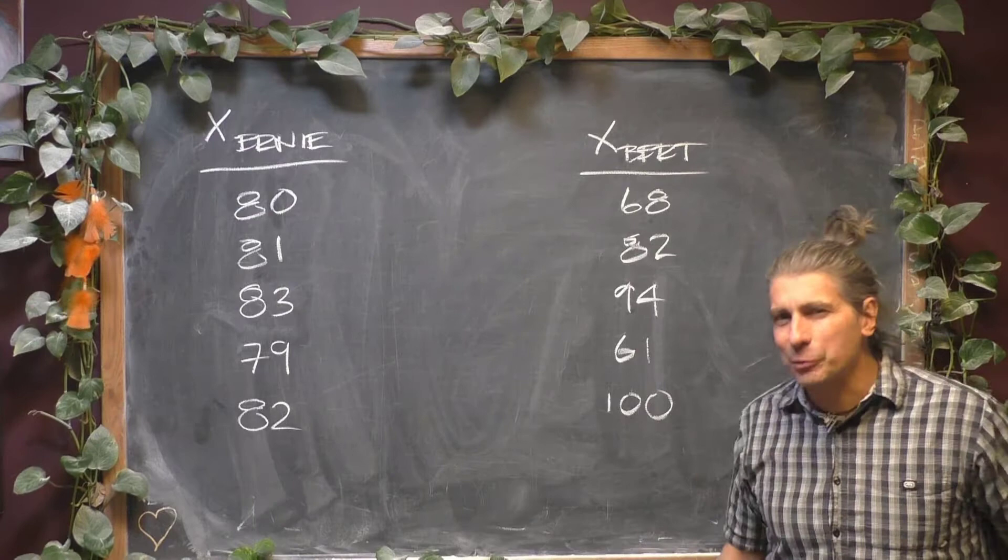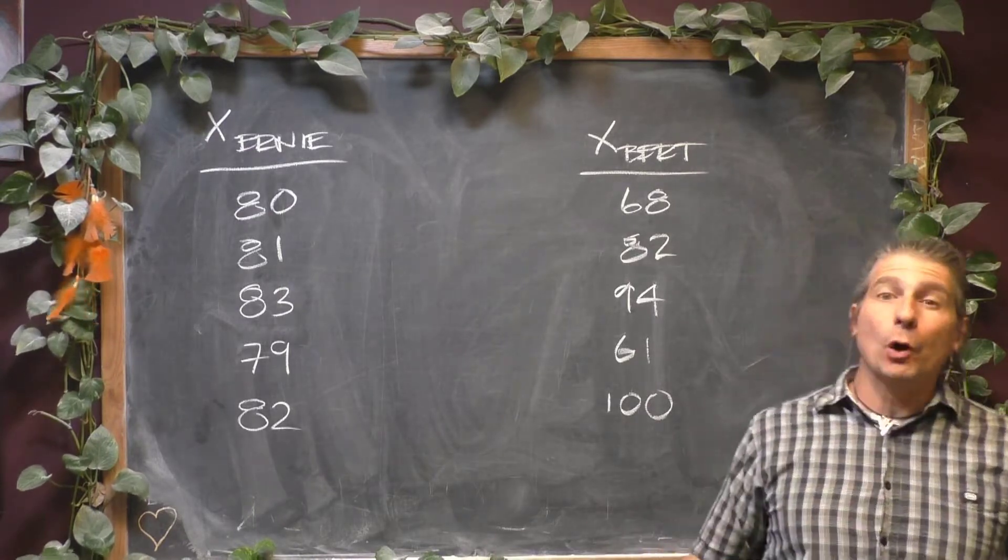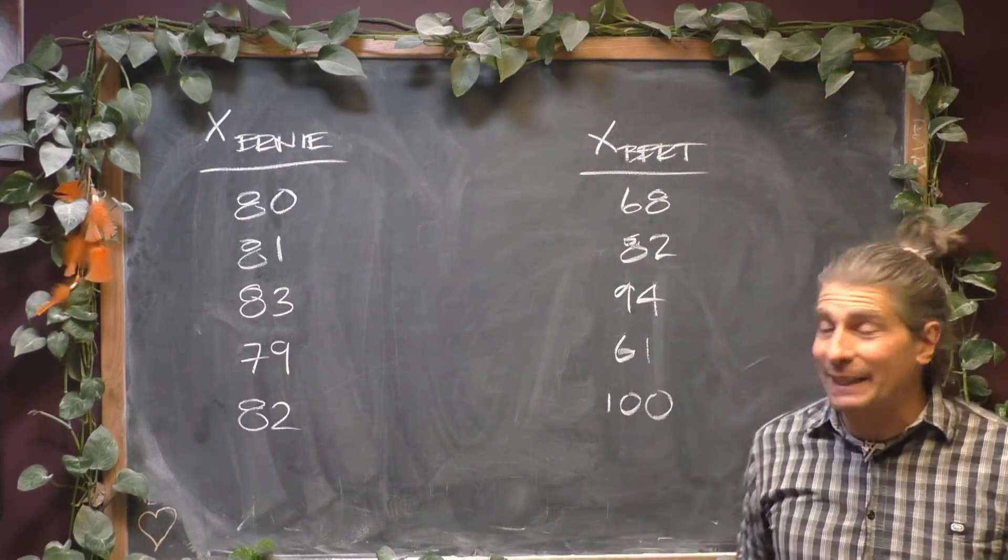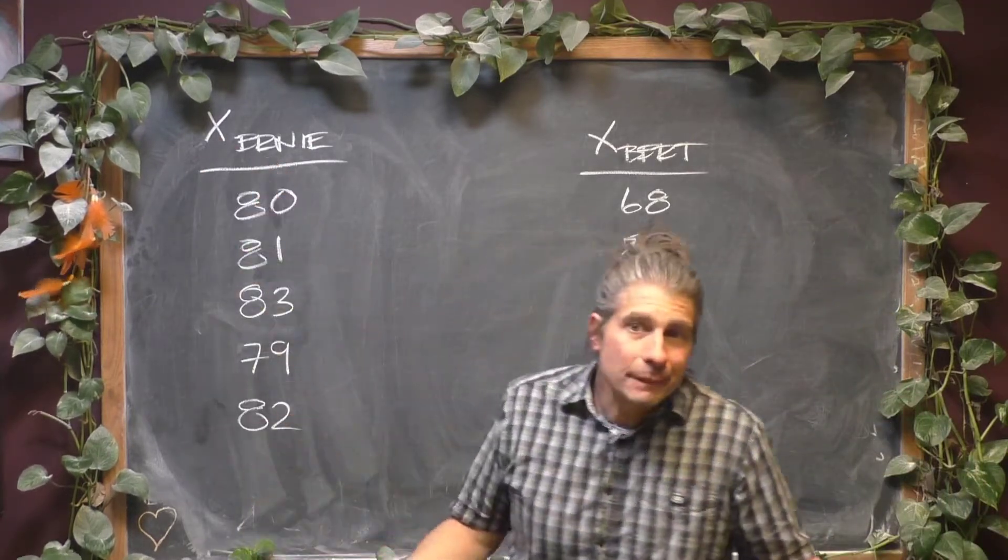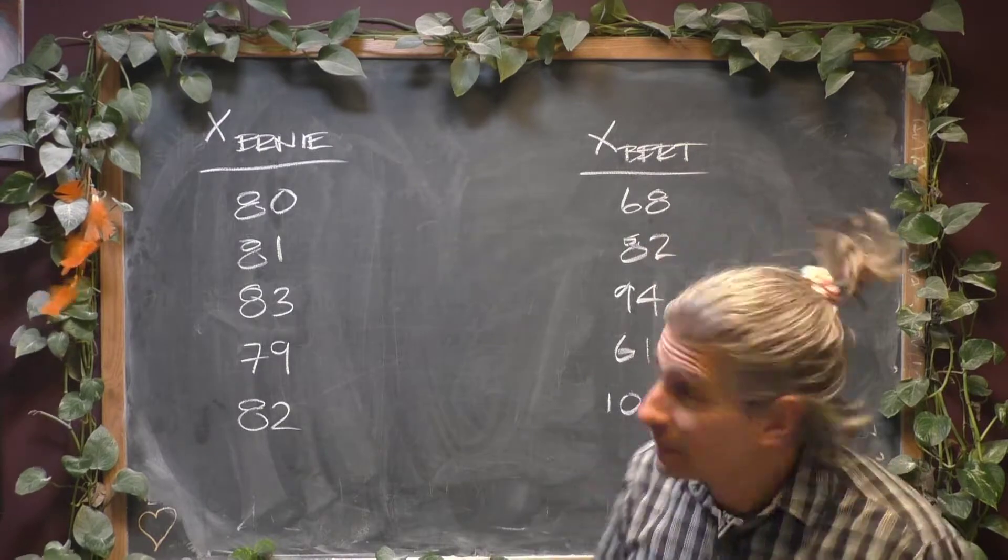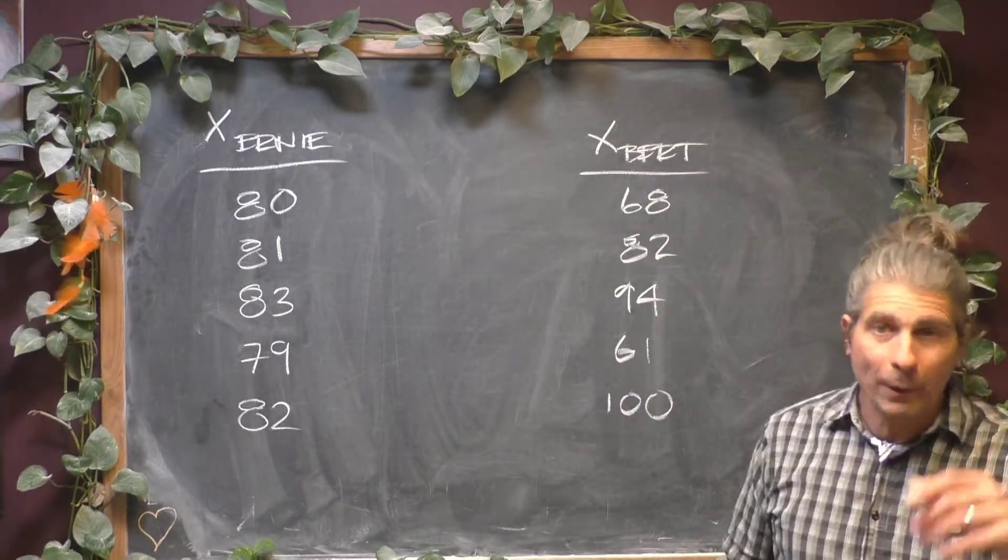I'm going to start sneaking subscripts in on you just because they're all over statistics. You'll often see little tiny subscripts. They don't mean anything other than a label. So X sub Ernie just means Ernie's data points and X sub Bert just means Bert's data points.